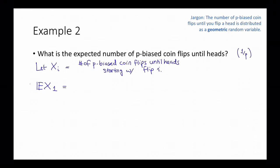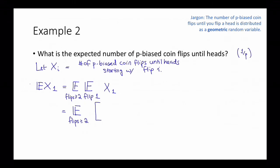Let's break up this expectation over those different sources of randomness — first consider the expectation over the randomness of the first flip, then the expectation over the rest. With probability p I flip a head, so the random variable has value 1. With probability (1−p) I get tails, contributing 1 for the tails just flipped, plus however many coin flips it will take to get heads starting with flip 2, which is X_2.